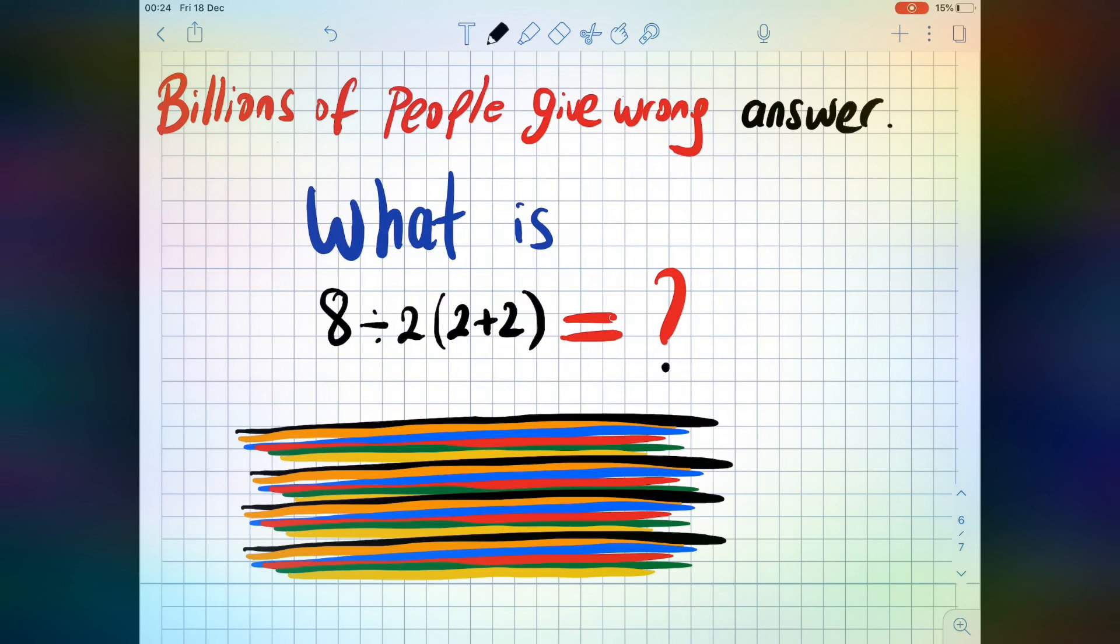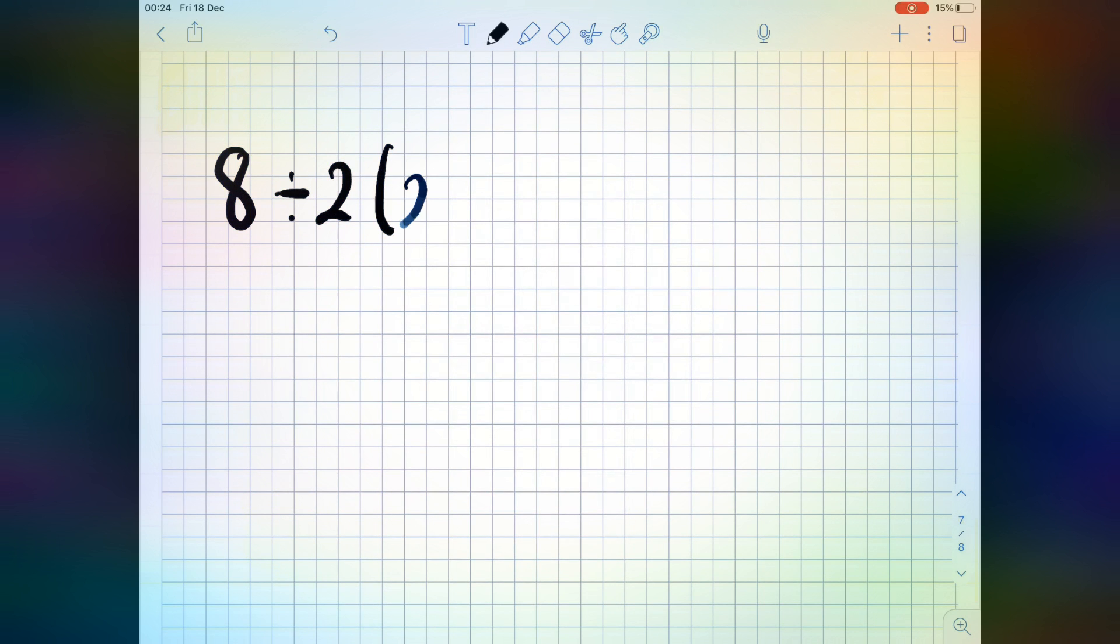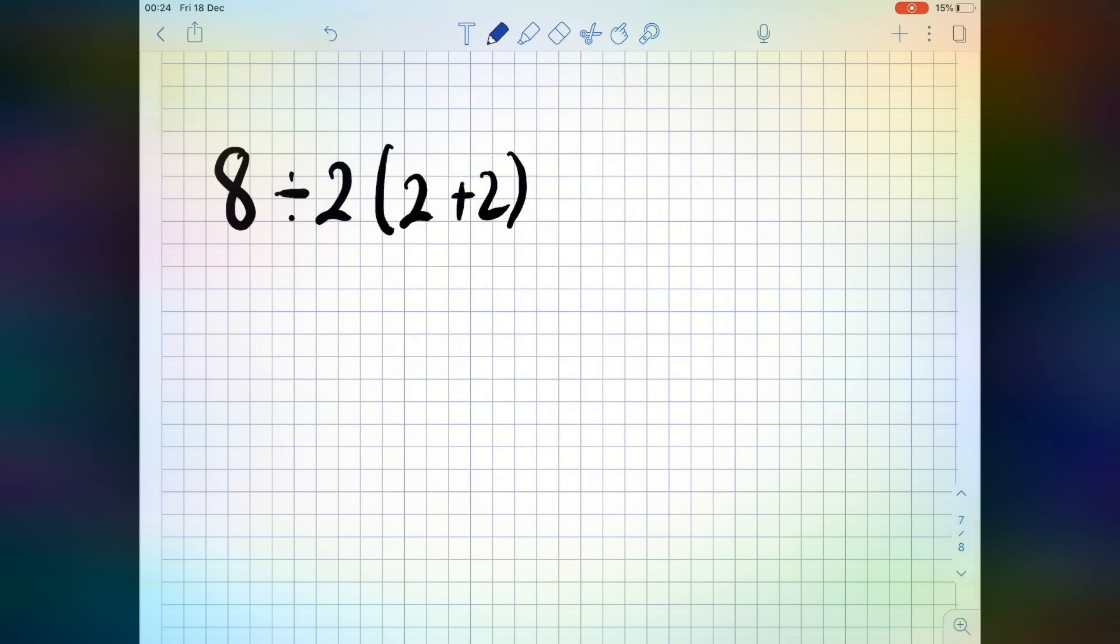Right now, I'm going to show you: 8÷2×(2+2). According to order of operations, we always start with multiplication or division first.